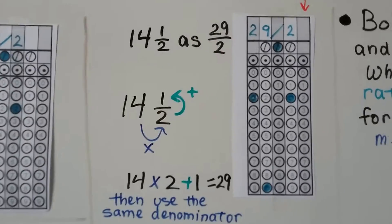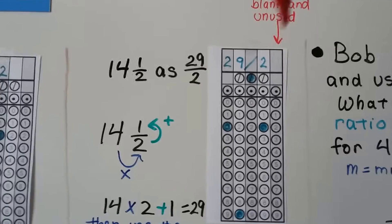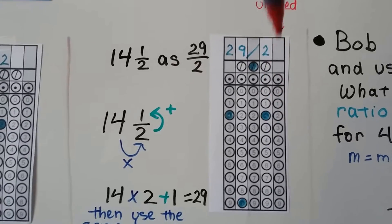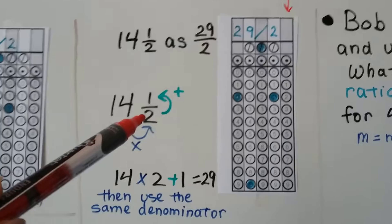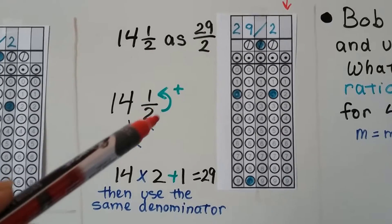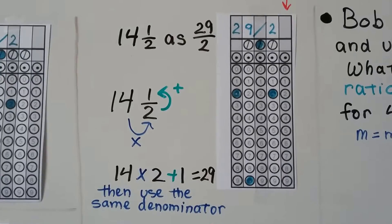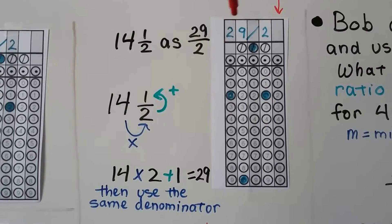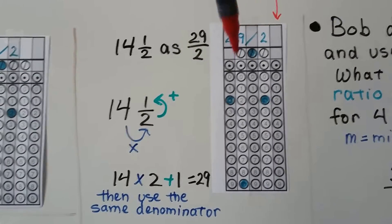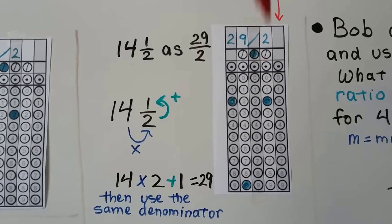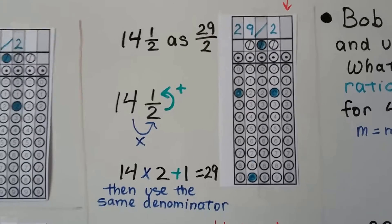Fourteen and a half would be twenty-nine halves. And this is blank and unused, so it's just left blank. We do fourteen times two, which is twenty-eight, plus one is twenty-nine. We keep that denominator. We have twenty-nine halves. We write the two, the nine, the slash, the two, and each one gets its own circle filled, including the slash.